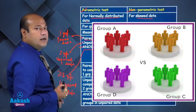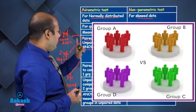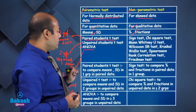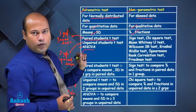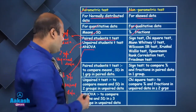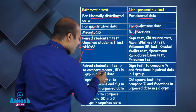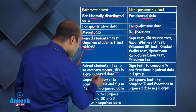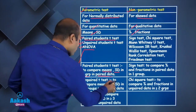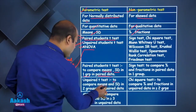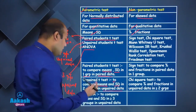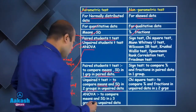To summarize: paired student t-test compares means and standard deviation in one group with paired data. Unpaired t-test compares means and standard deviation in two groups with unpaired data.